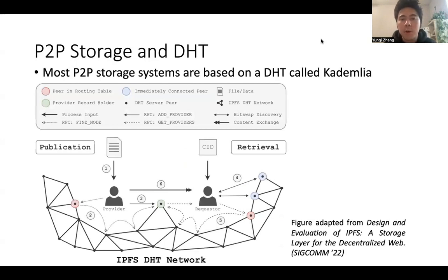Today's P2P storage systems are based on a distributed hash table called Kademlia. In a DHT network, a file provider uploads the file to the network. And the file will be stored on the node whose node ID is close to the content identifier of the file.